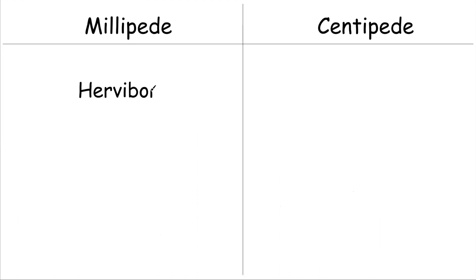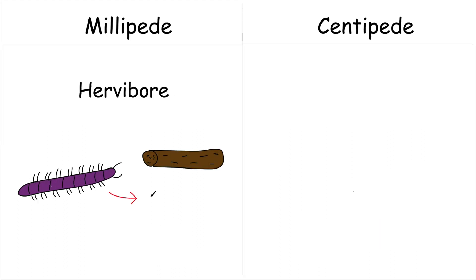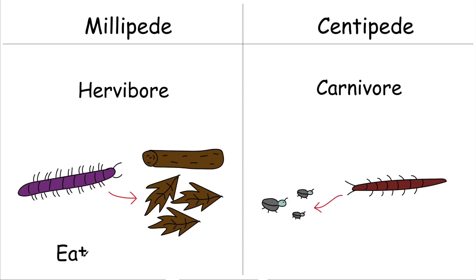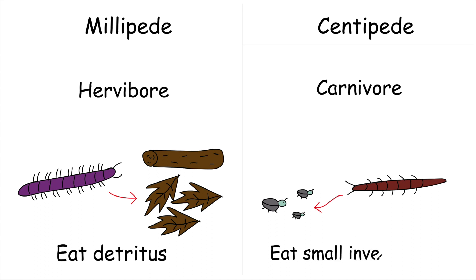Another difference is diet. Millipedes are herbivores, feeding on decomposing plant matter and detritus on the forest floor. Centipedes are carnivores and hunt other insects and small invertebrates for their meals.